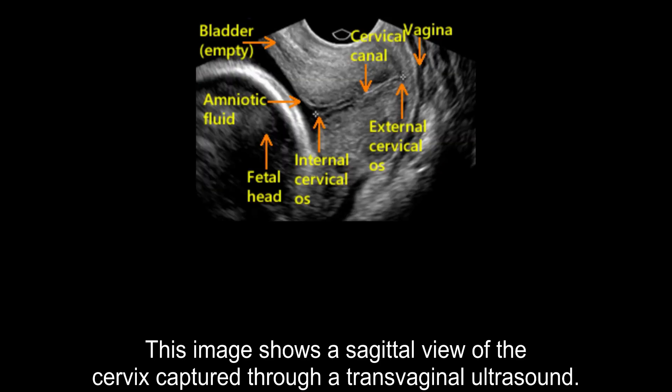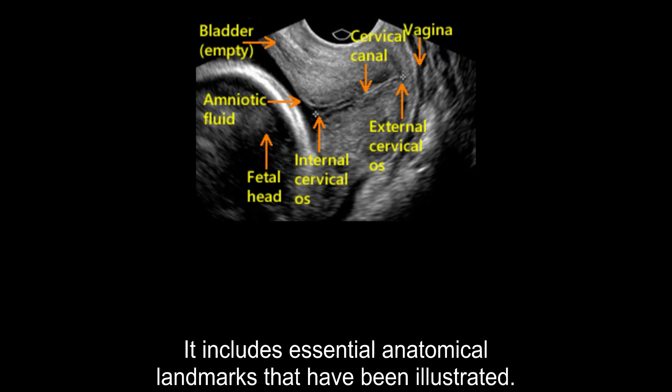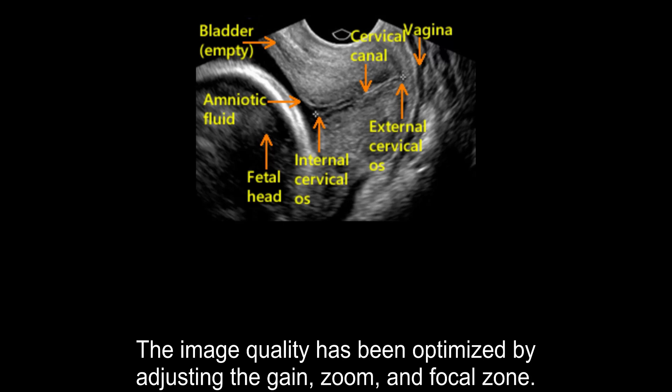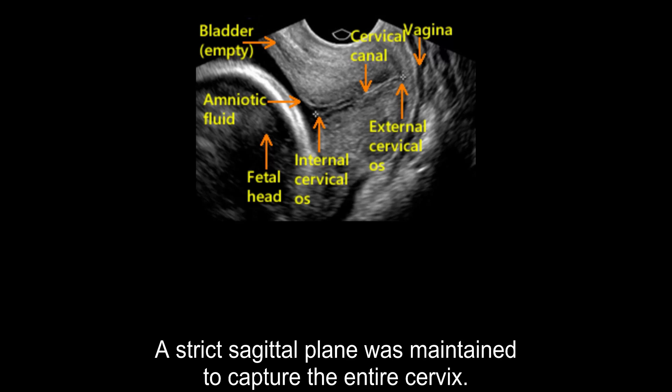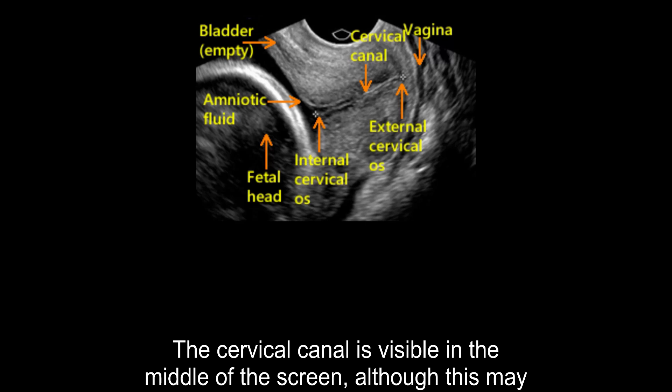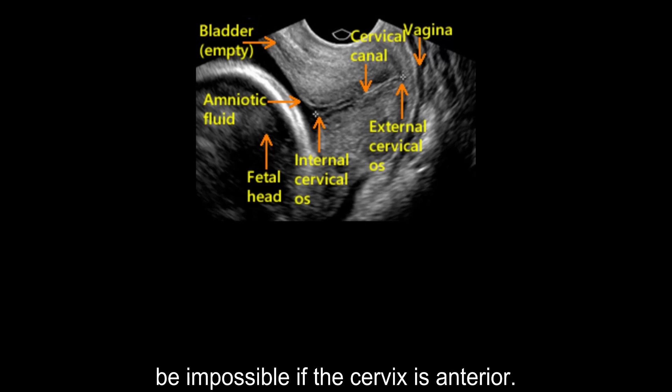This image shows a sagittal view of the cervix captured through a transvaginal ultrasound, with essential anatomical landmarks illustrated. The image quality has been optimized by adjusting the gain, zoom, and focal zone. A strict sagittal plane was maintained to capture the entire cervix. The cervical canal is visible in the middle of the screen, although this may be impossible if the cervix is anterior.